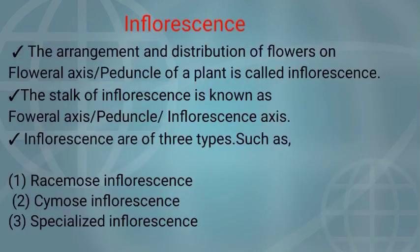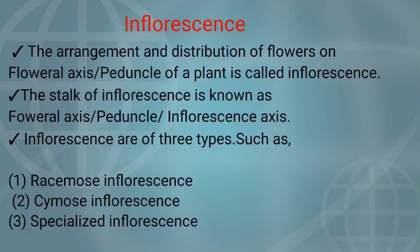The very next topic is inflorescence. The arrangement and distribution of flowers on the floral axis or peduncle of a plant is called inflorescence. The stalk of inflorescence is known as the floral axis, peduncle, or inflorescence axis. Inflorescences are of three types: racemose inflorescence, cymose inflorescence, and special type of inflorescence.